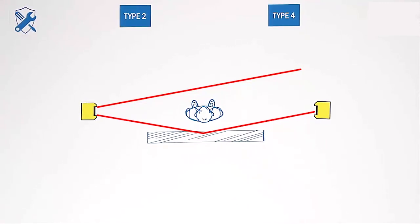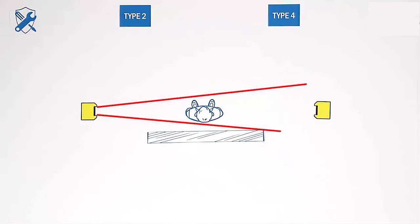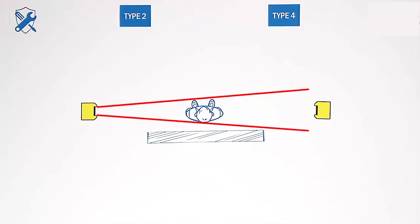By using a type 4 device, the distance to reflecting surfaces can be halved, as the allowed aperture angle is 5 degrees.